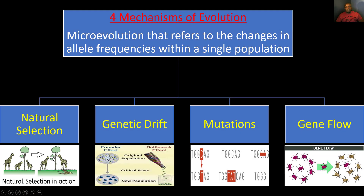Now let's look at four mechanisms of evolution. These are microevolution — changes in allele frequencies within a single population. The four mechanisms are: natural selection, genetic drift, mutations, and gene flow.